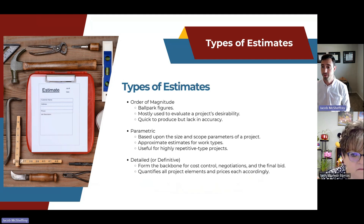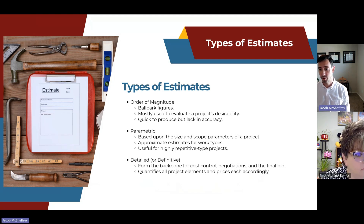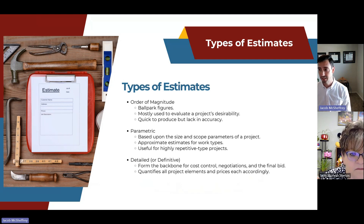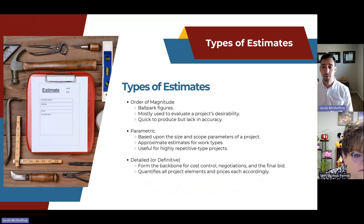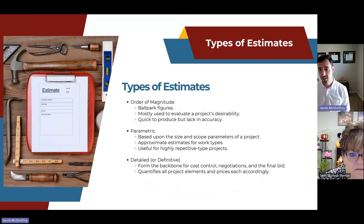Finally, the detailed or definitive estimate is the most specialized type. It forms the backbone for cost control, negotiations, and the final bid itself, quantifying all project elements and pricing each accordingly. Detailed estimates take a great deal of time to complete but are the most accurate. This is the most common type used in government contracting because margins are so tight — you really need to know what every single cost item is going to be to put together the most competitive bid.